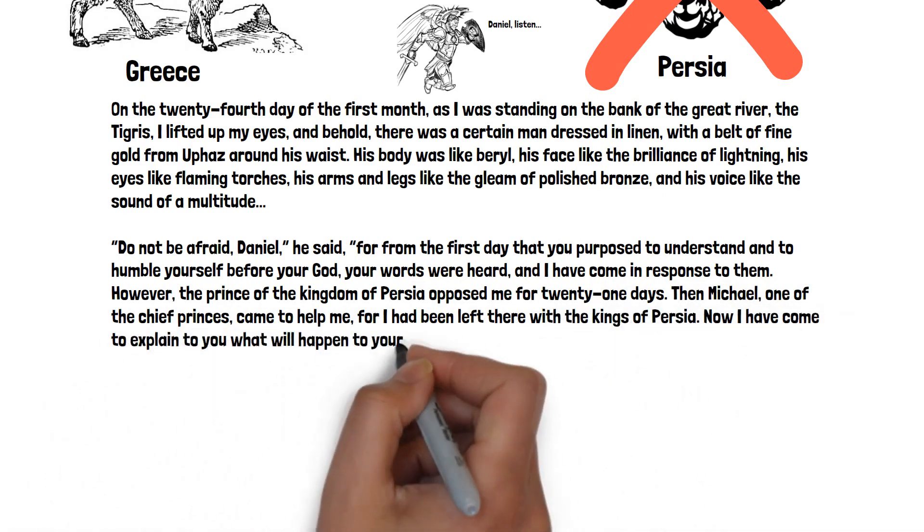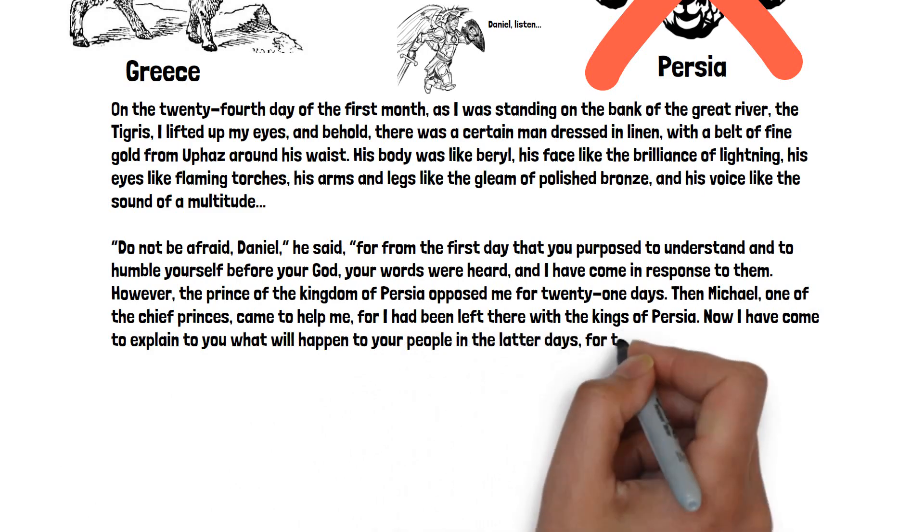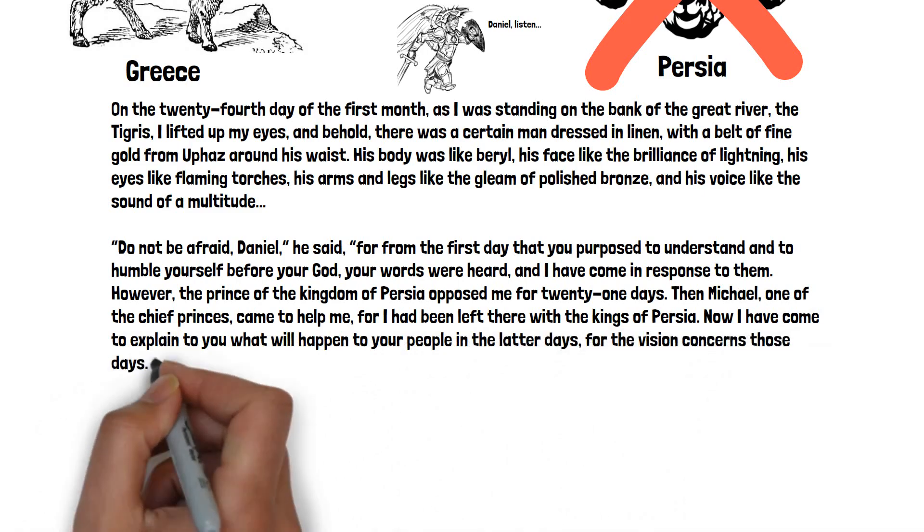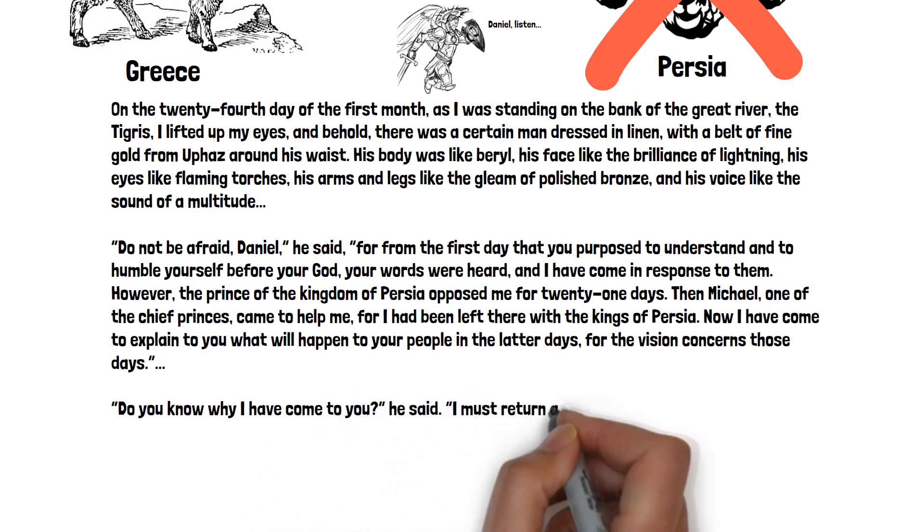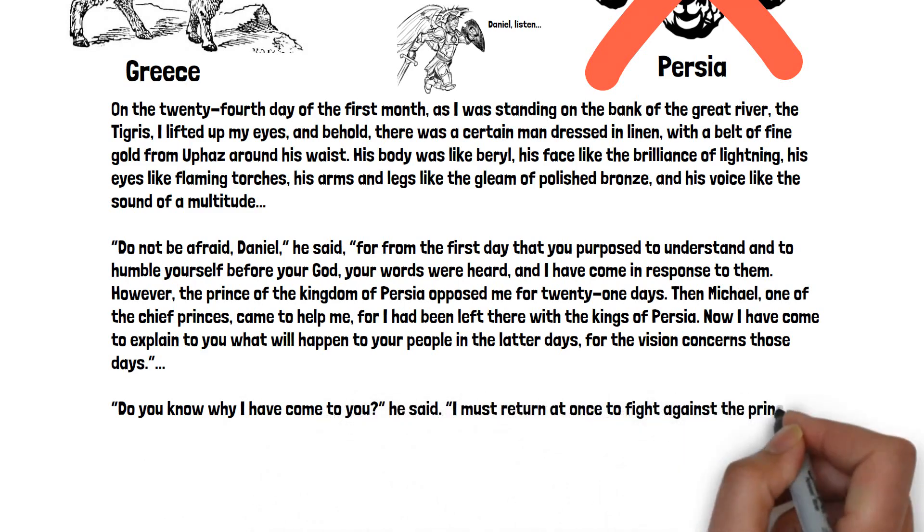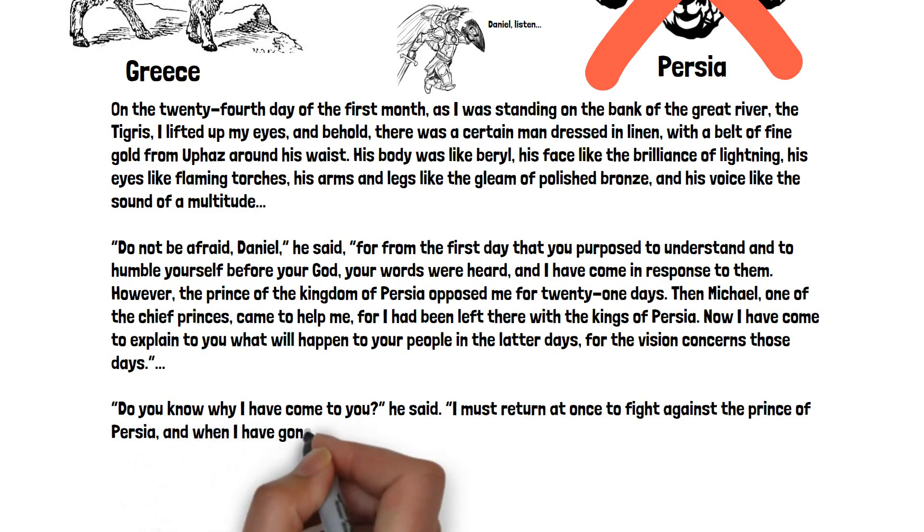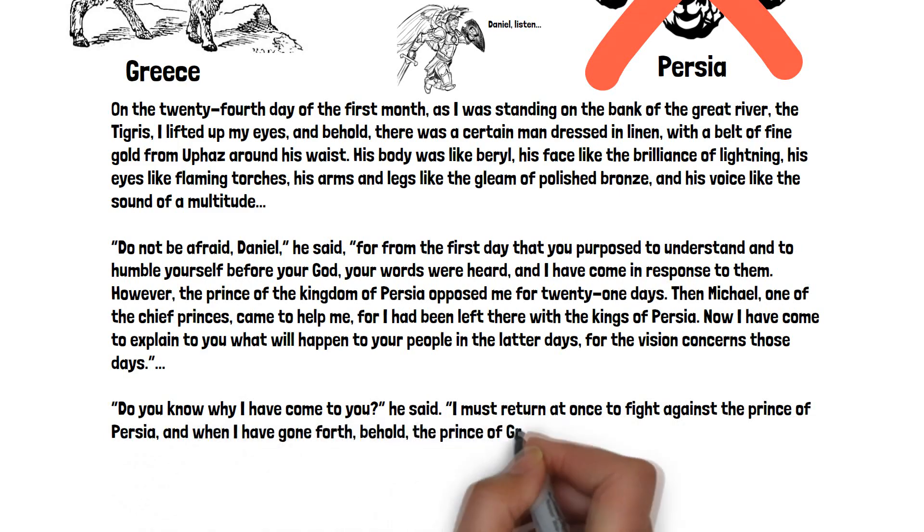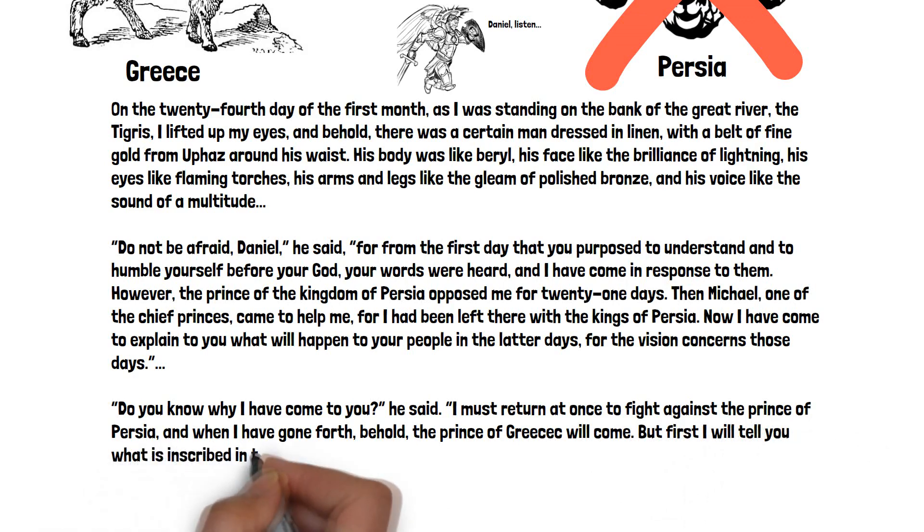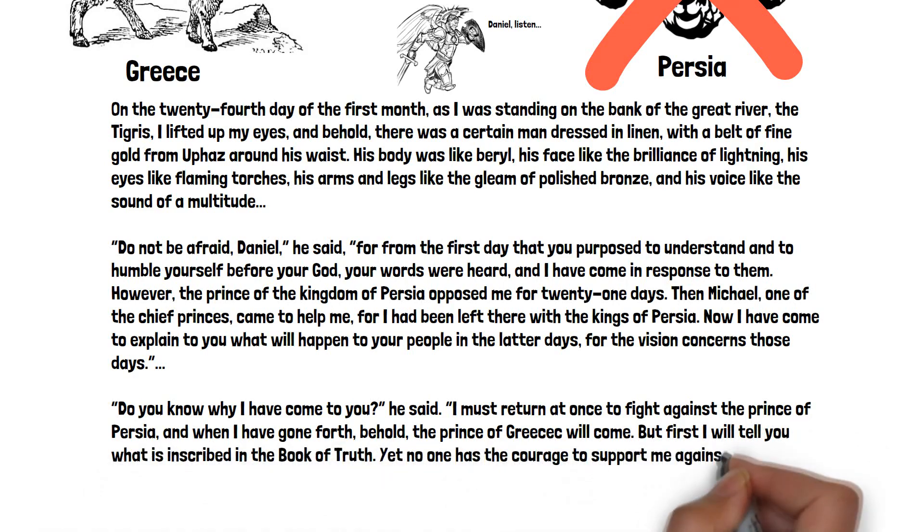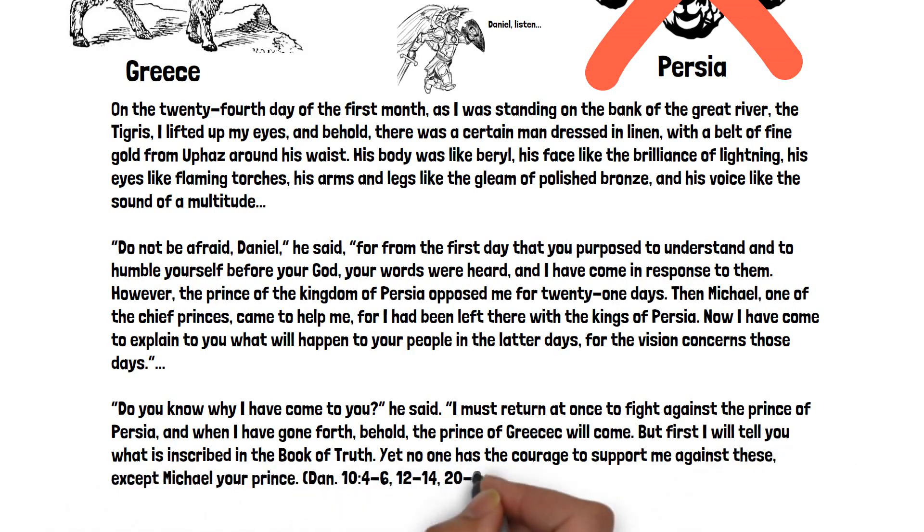Now I have come to explain to you what will happen to your people in the latter days, for the vision concerns those days. Do you know why I have come to you? He said. I must return at once to fight against the prince of Persia, and when I have gone forth, behold, the prince of Greece will come. But first I will tell you what is inscribed in the book of truth. Yet no one has the courage to support me against these, except Michael, your prince.